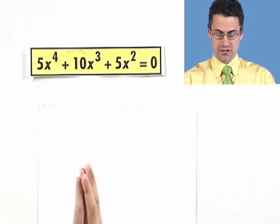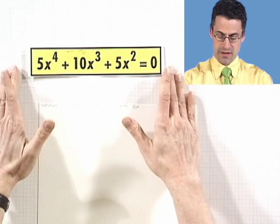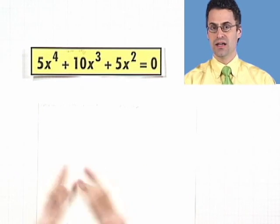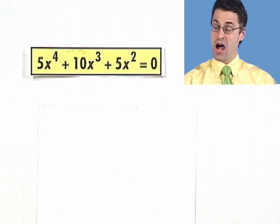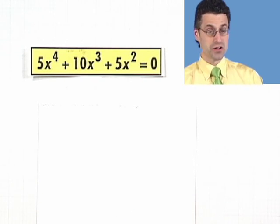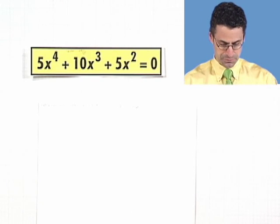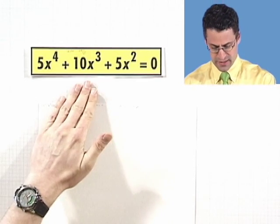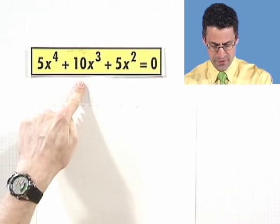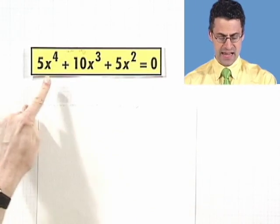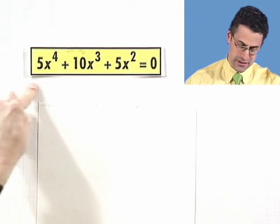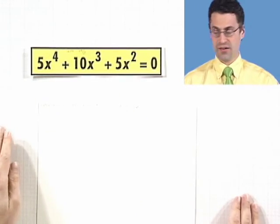The first thing I always do when I see a polynomial is ask, can I factor it? If I can factor it, I actually have a really good shot at finding the solutions. Here I'm in great luck because I see there's a common factor in every term. There's a 5 factor in every term, but there's also an x squared factor in every term, so I can factor out a 5x squared.